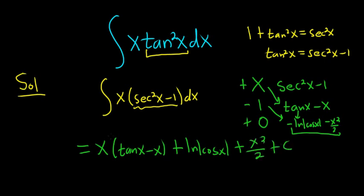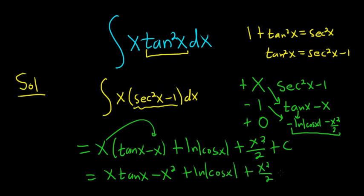Let's distribute this x here to both the tan and the x. So it'll be x tan x, kind of an interesting problem, minus x squared, plus ln absolute value cosine x, plus x squared over 2, plus c.